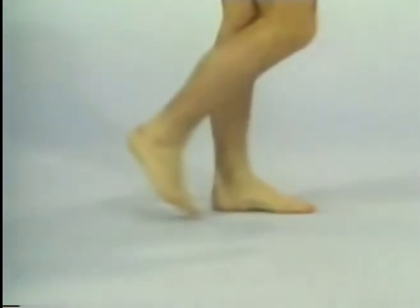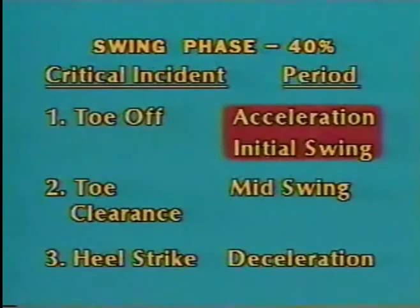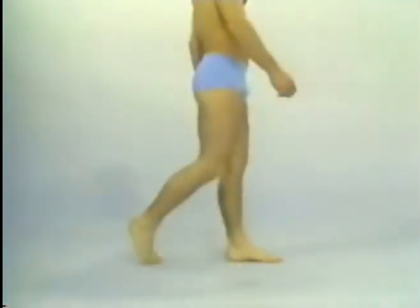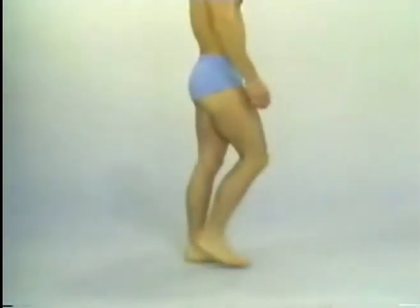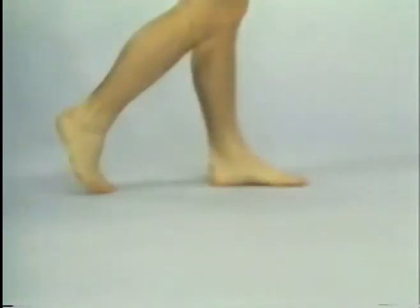Like stance phase, the swing phase can also be broken down into various periods. Acceleration or initial swing. Just prior to toe off, the iliopsoas muscle contracts to propel the leg forward by flexing the hip. This also results in knee flexion, which raises the leg, enabling the foot to clear the ground. The foot and ankle dorsiflexors also contract to give further clearance from the ground.